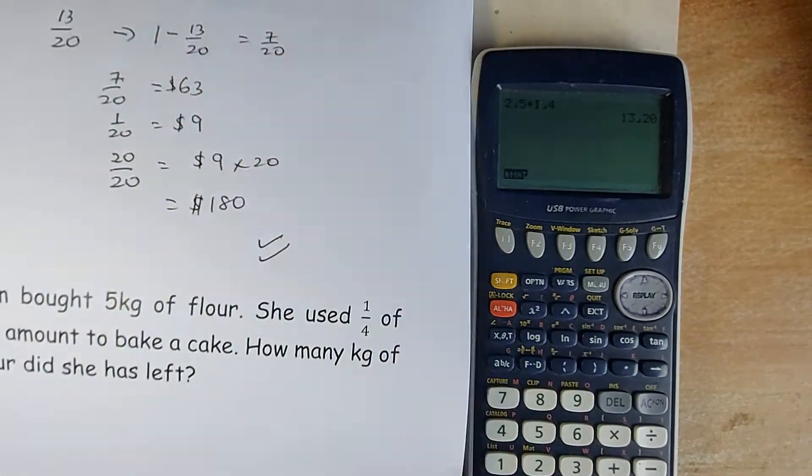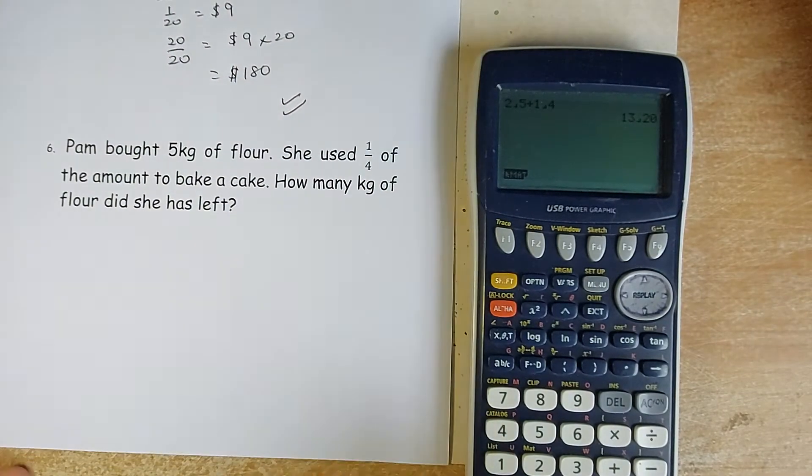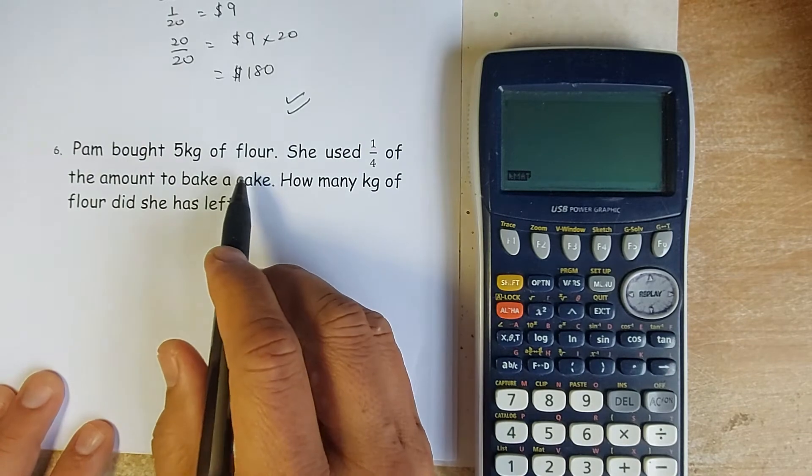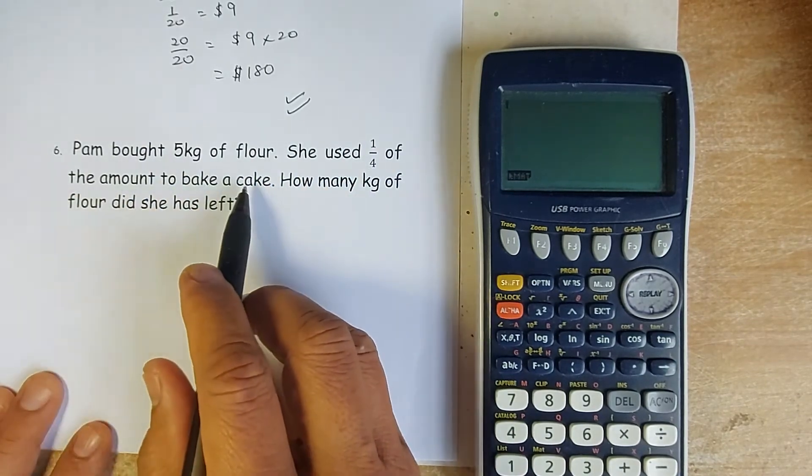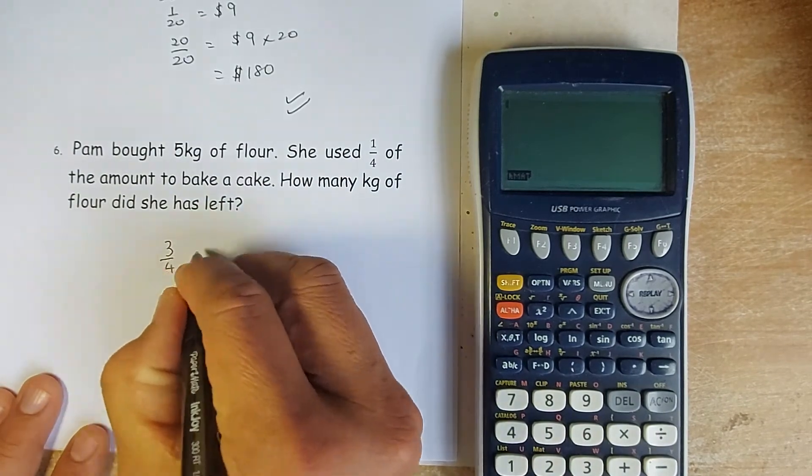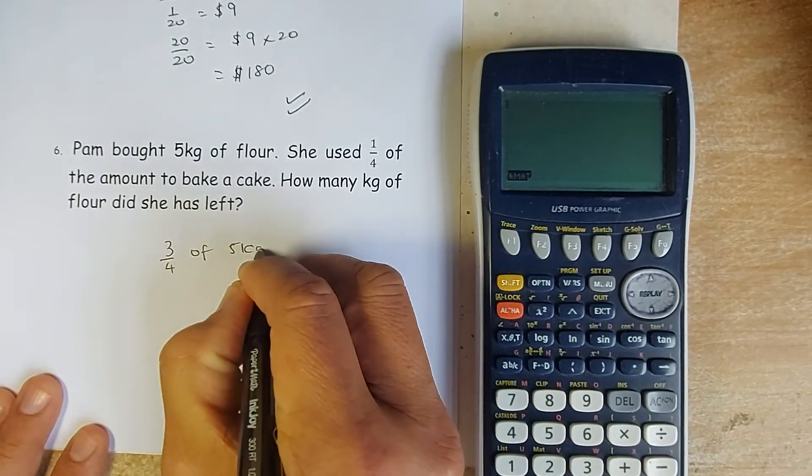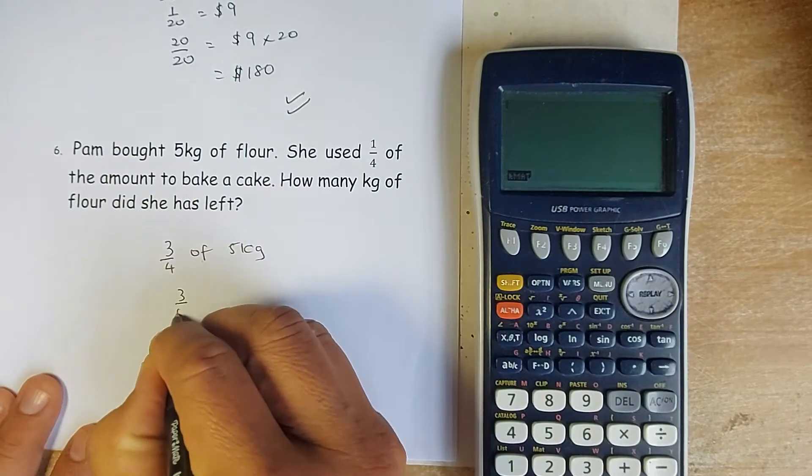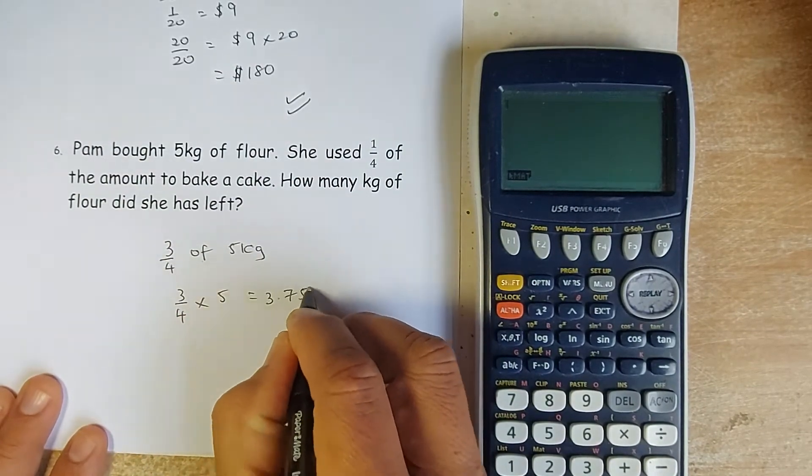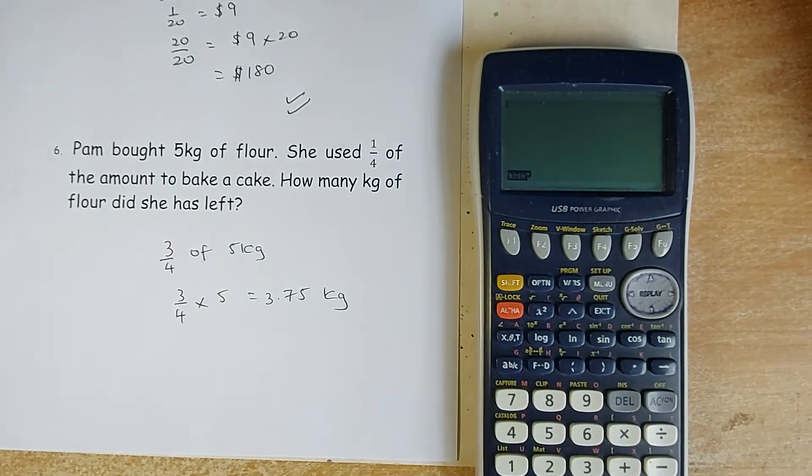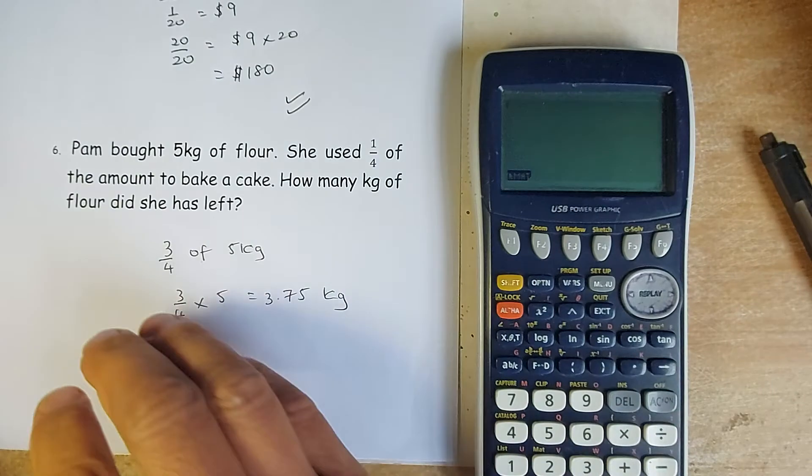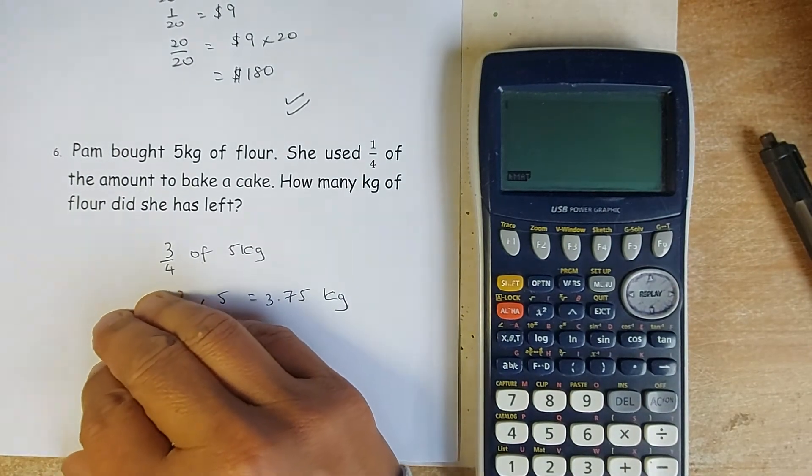We shall now proceed to the next word problem. This is a lot easier. Pam bought 5 kg of flour. She used 1 quarter to bake a cake. How many kg she left? So she used 1 quarter, so she left with 3 quarter of 5 kg. So again, the word 'of' means in math you multiply. 3 quarters times 5, and the answer is 3.75 kg. Make sure, don't forget the unit for every question you do.